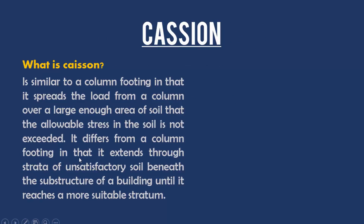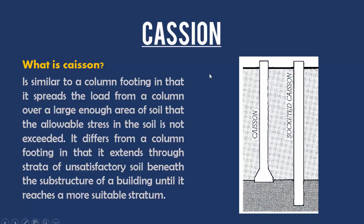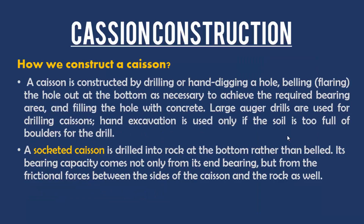A caisson is similar to a column footing in that it spreads the load from a column over a large enough area of soil so that the allowable stress in the soil is not exceeded. It differs from a column footing in that it extends through strata of unsatisfactory soil beneath the substructure of a building until it reaches a more suitable stratum. A caisson is constructed by drilling or augering a hole, belling the hole out at the bottom as necessary to achieve the required bearing area, and filling the hole with concrete.